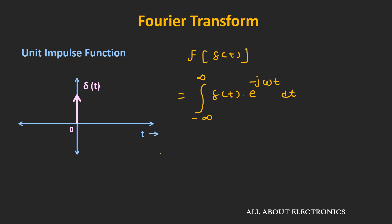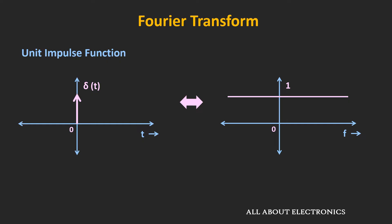Now, as we have seen, when we multiply the δ function with any other function and integrate over minus infinity to plus infinity, then we get the value of that function at time t is equal to zero. So for the given integration, we get the value of this exponential at time t is equal to zero, that is e to the power zero, and that is equal to one. That means the Fourier transform of this unit impulse function is equal to one. And graphically, if we see this in the frequency domain, then it will look like this.